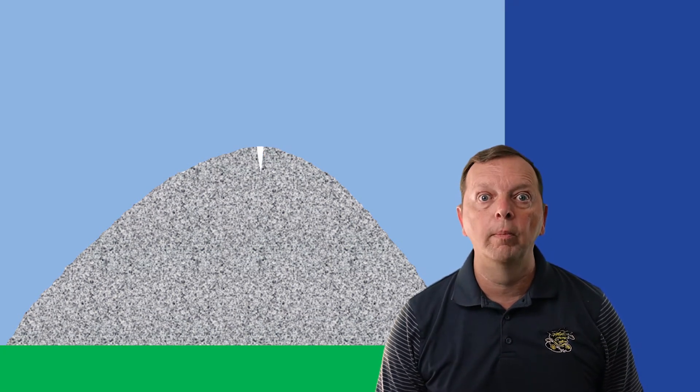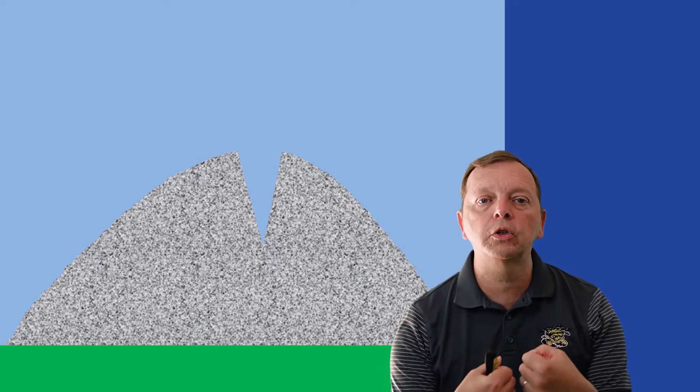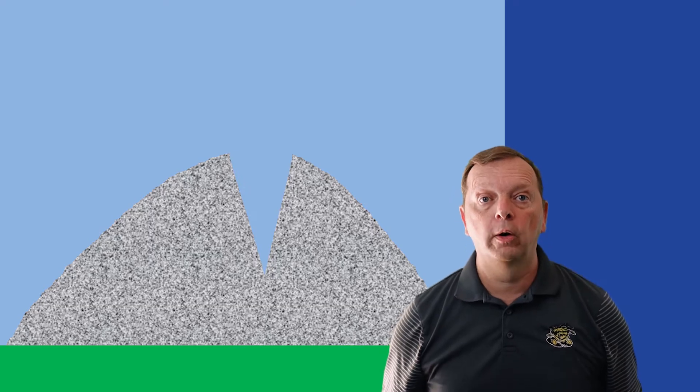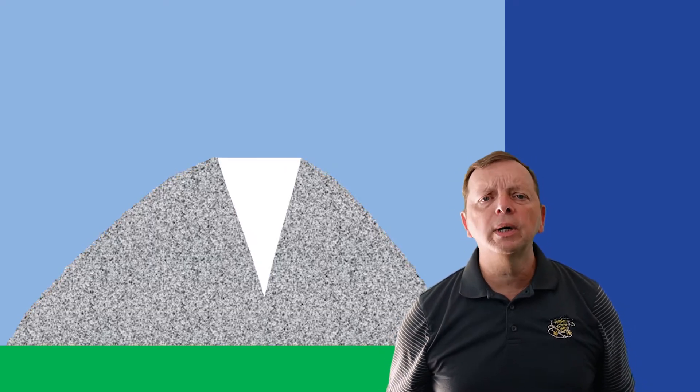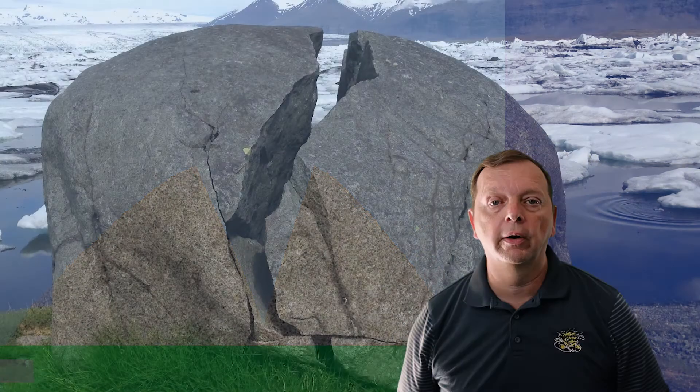Once we have these smaller cracks, something called ice wedging may occur. This happens when water from rain or melting snow fills up those cracks. Then when the temperature drops, the water will freeze into ice. We know that when water freezes, it expands — so this water in the crack will expand and serve as a wedge, breaking the rocks apart wider and wider. This cycle continues for thousands of years until the rock is left in several different pieces, such as this boulder here in Iceland.